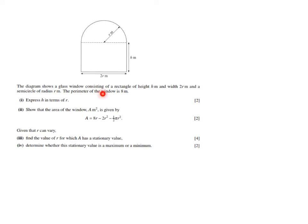The perimeter of the window is 8 meters, and that is important. The first question, worth two points, asks us to express h in terms of r. We need to create an equation where h is the subject.